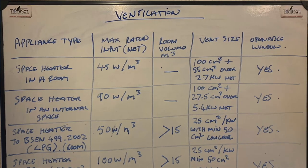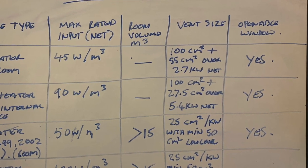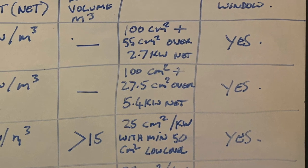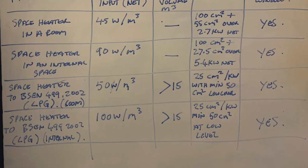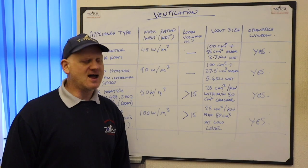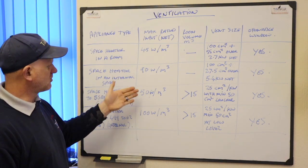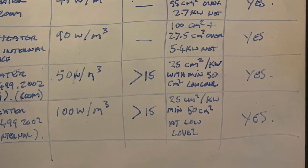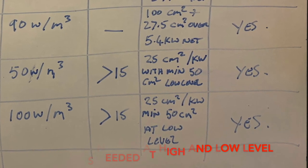For a space heater in an internal space it's 90 watts per metres cubed, and the vent required is 100 centimetres squared plus 27.5 centimetres squared for every kilowatt over 5.4 kilowatts net, with an openable window. For a space heater conforming to BS EN 499:2002 — which is an LPG fire stored in a room — it's up to 50 watts per metres cubed, the room volume must be greater than 50 metres cubed, and the vent is 25 centimetres squared per kilowatt with a minimum of 50 centimetres squared at high and low level, plus an openable window.